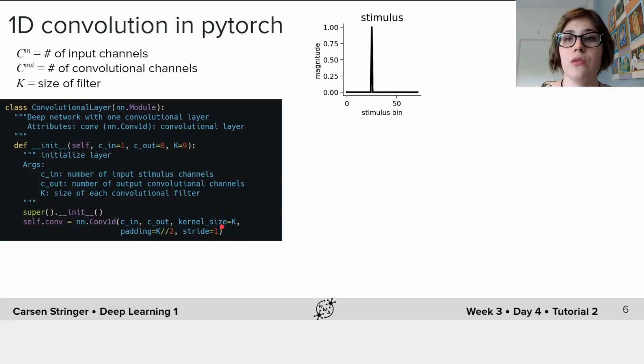We'll set the padding to the kernel size over two and then the stride will be one. So now in this case if we give it an input which has a length of 60, we'll get an output which is also a length of 60.